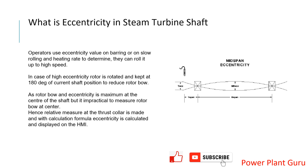Operators and turbine users use the eccentricity value when the machine is on a slow rolling speed and you are heating the machine, to make sure that the rotor doesn't have a bow condition when you are starting. The eccentricity value depends on the type of machine and its megawatt rating — based on rotor length and other factors — and may vary for machines from 35-40 megawatt up to 600 megawatt. Consider a condition where your machine is coming from a large outage and you see the eccentricity value is too high — higher than you have seen before.